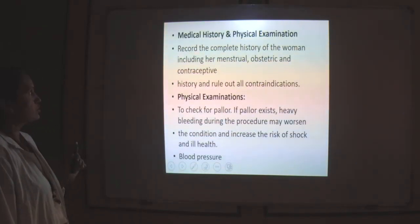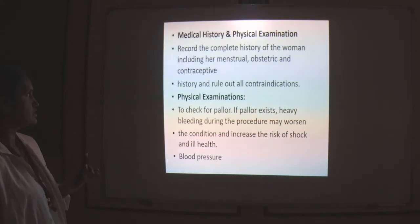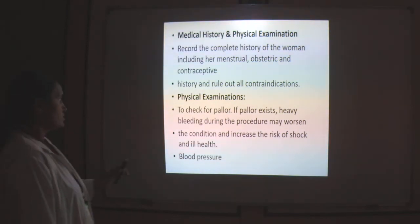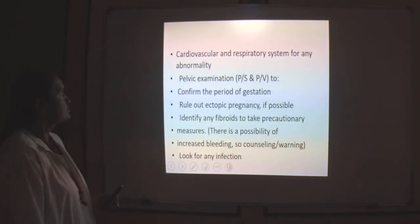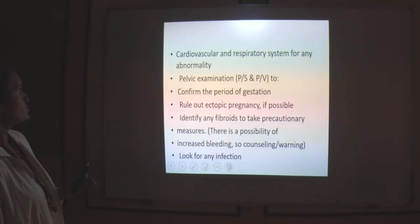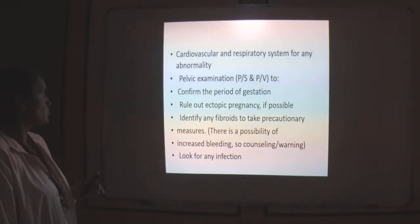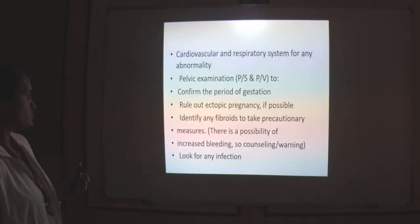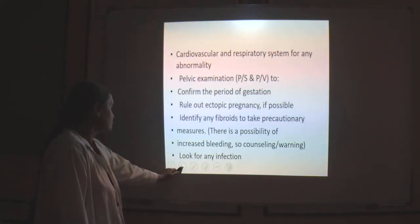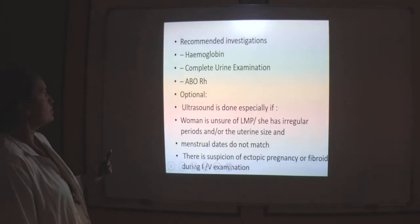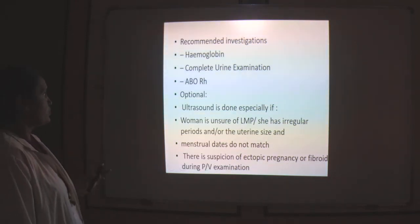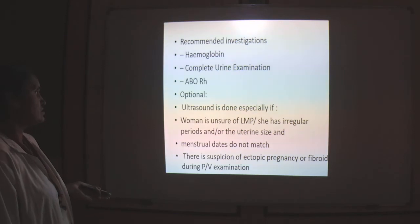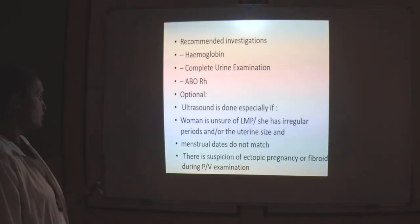You have to take a detailed history and examination: record complete menstrual history, obstetric history, and contraceptive history, and rule out all contraindications. Do physical examination — check for pallor, blood pressure, cardiovascular and respiratory system examination, and pelvic examination. Per-speculum and per-vaginal examination to confirm the period of gestation, rule out ectopic pregnancy, and identify any fibroid. Recommended investigations include hemoglobin, complete urine examination, and blood grouping and typing. Ultrasonography is optional but done especially if the woman is unsure of LMP, has irregular periods, uterine size and menstrual dates do not match, or there is suspicion of ectopic pregnancy or fibroid.